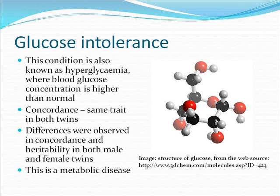Glucose intolerance is also known as hyperglycemia, where blood glucose concentration is higher than normal. In the study, differences were observed in the rate of concordance and inheritance rates with male and female twins who had glucose intolerance. The male twins had a more distinct genetic component than female twins. The findings showed that genetic and environmental factors differed between male and female twins, though the reason for these differences is not known. However, the differences showed that controlling metabolic syndrome is important.